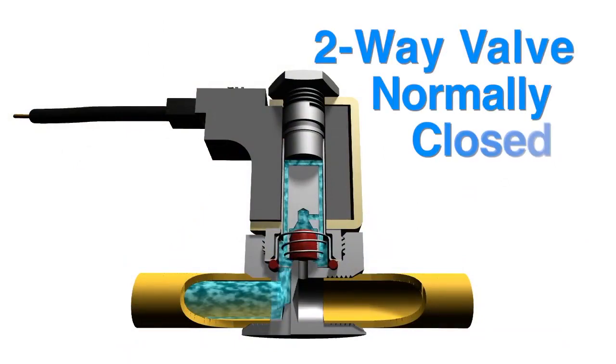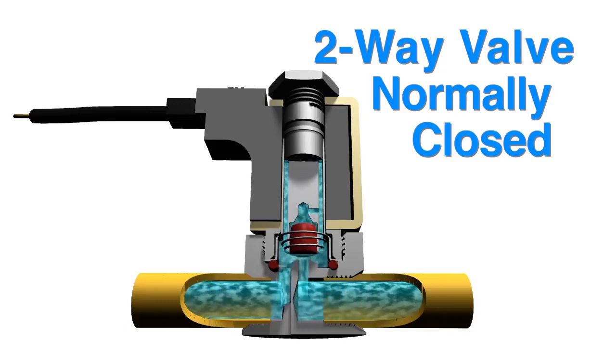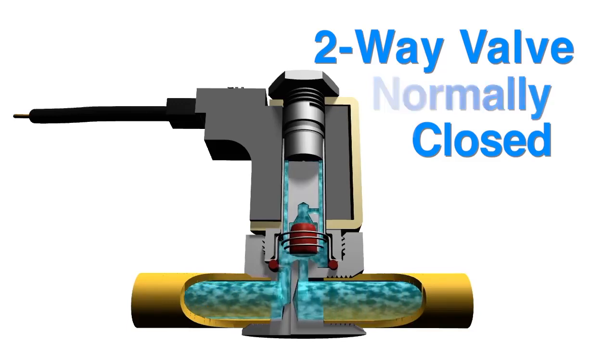In two-way normally closed electric solenoid valves, the pressure flow from one port to the other is blocked until the power is turned on and the valve becomes energized. Powering on then allows the media to flow freely through the valve.